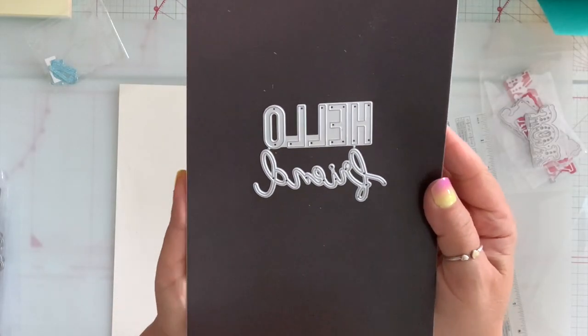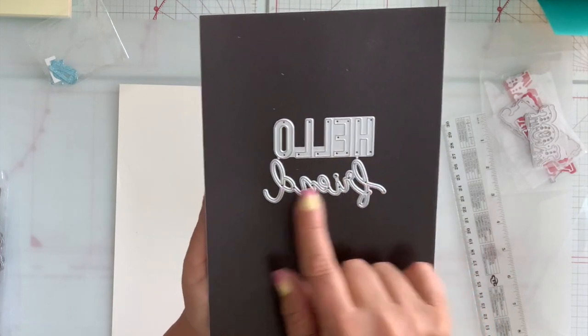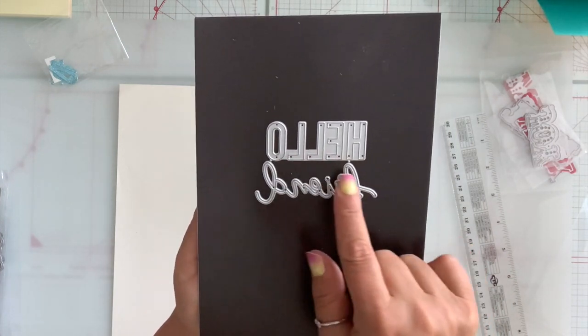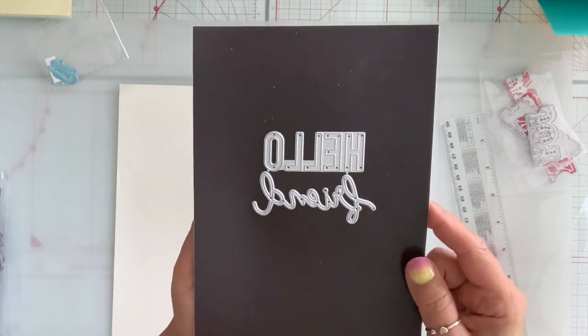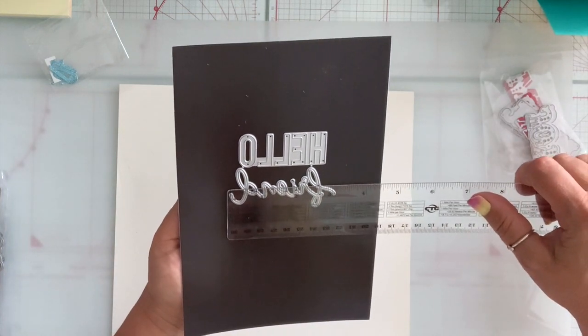Next, I have this word die and this one spells hello friend. The friend cuts out one piece and it's cursive and the hello cuts out each letter separately and I'll measure it on here.